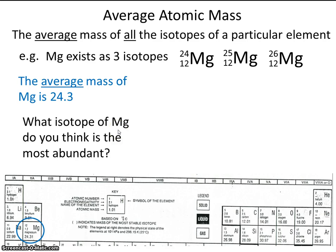Well, think about it this way. If we threw all the magnesium atoms in the world in like a big bag and we reached in and we pulled out just one of them, which one do you think it would be, 24, 25, or 26?